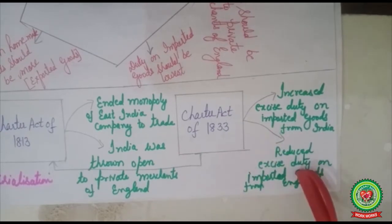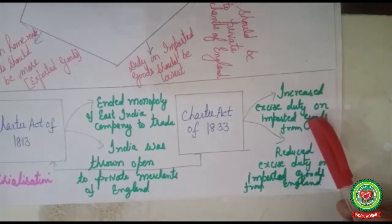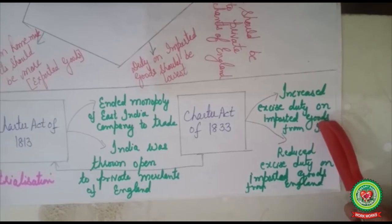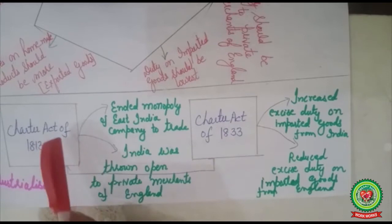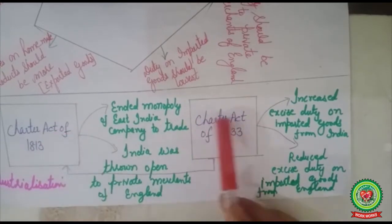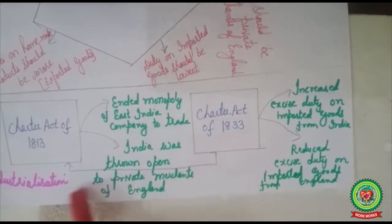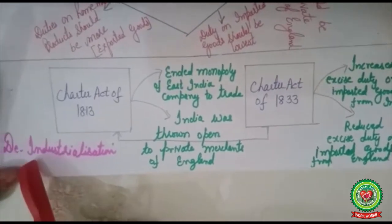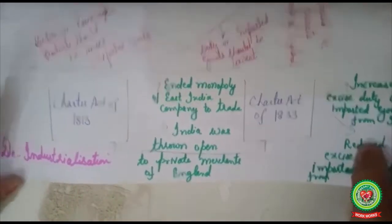This reduction in duty allowed British goods to compete with Indian goods, and ultimately the door of the Indian manufacturer to the British market was closed. Both the Charter Act of 1813 and the Charter Act of 1833 resulted in the deindustrialization of the Indian economy.